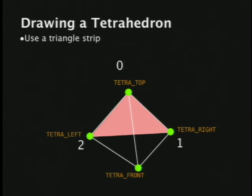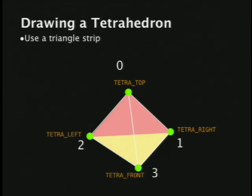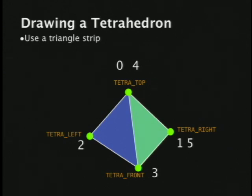In a triangle strip, the next triangle uses the last two vertices. After 0,1,2, we add front — the only remaining vertex not yet used. The next triangle is 2,3, and the only option is top. Finally, top and front are used, so right is all that's left. This is extremely easy to mess up — it requires a lot of scratch paper and head scratching. Don't worry if it's not immediately obvious; it often requires looking something up or trial and error.